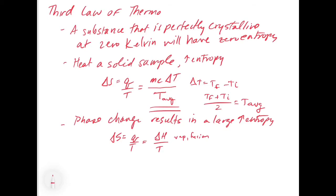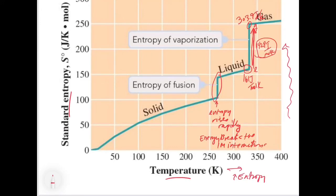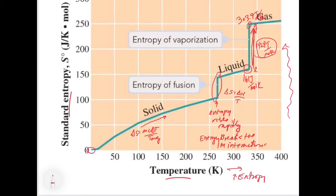Looking at the graph we marked up in the last video, we can now understand it differently. At zero kelvin the standard entropy is zero. As we heat the substance, entropy rises — that rise is described by delta S equals mc delta T over T average. The phase changes are given by delta S equals delta H over T. Using these two equations together, we can determine the entropy at any given temperature for a system.